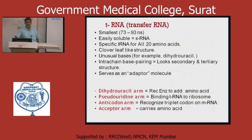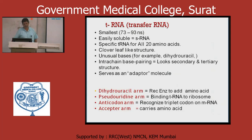tRNA is the smallest RNA — 73 to 93 nucleotides, easily soluble, so it is also called soluble RNA or sRNA. There is a specific tRNA for all 20 amino acids — each amino acid has its own tRNA. It has a cloverleaf structure.